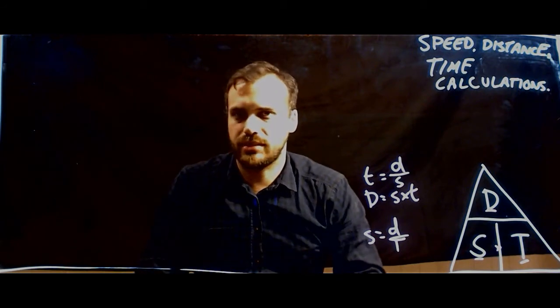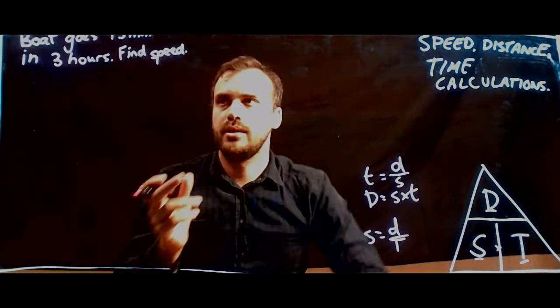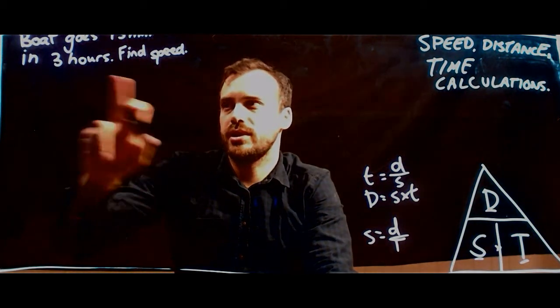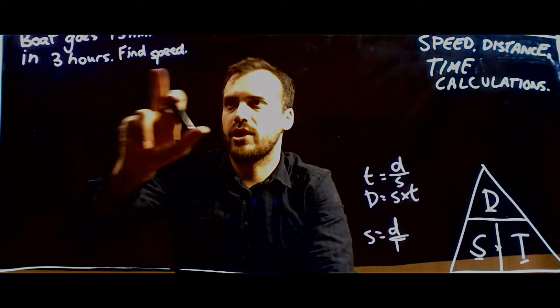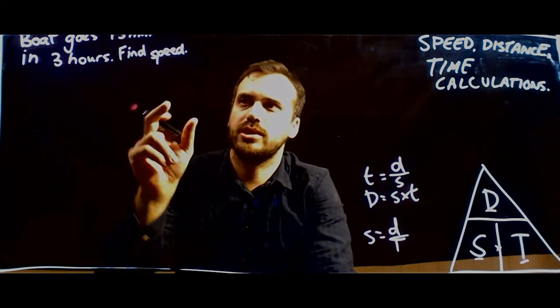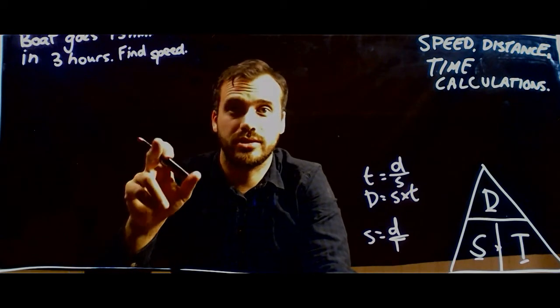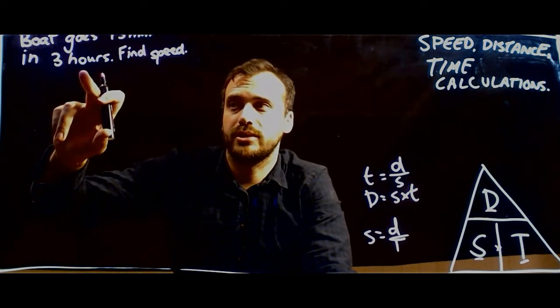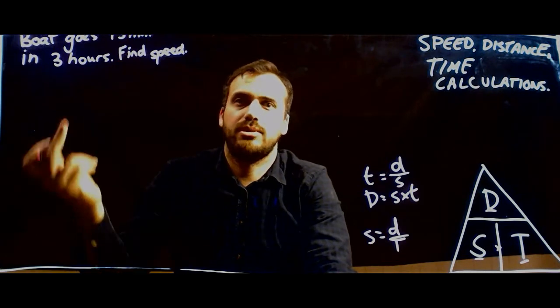Okay, so let's do some pirate maths. So here's our first question here. A boat goes 15 nautical miles in three hours. Find its speed. Now because we're pirates here, remember that we're talking about speed in knots, which you should also remember is nautical miles per hour.